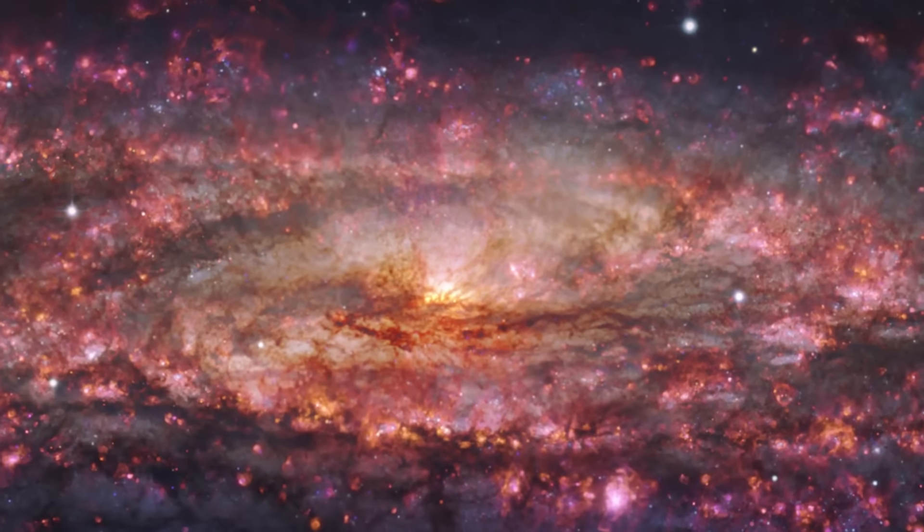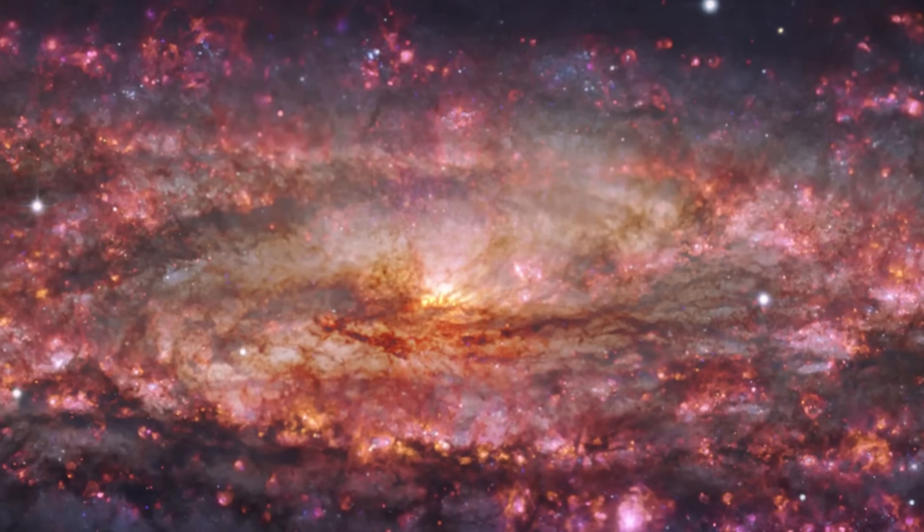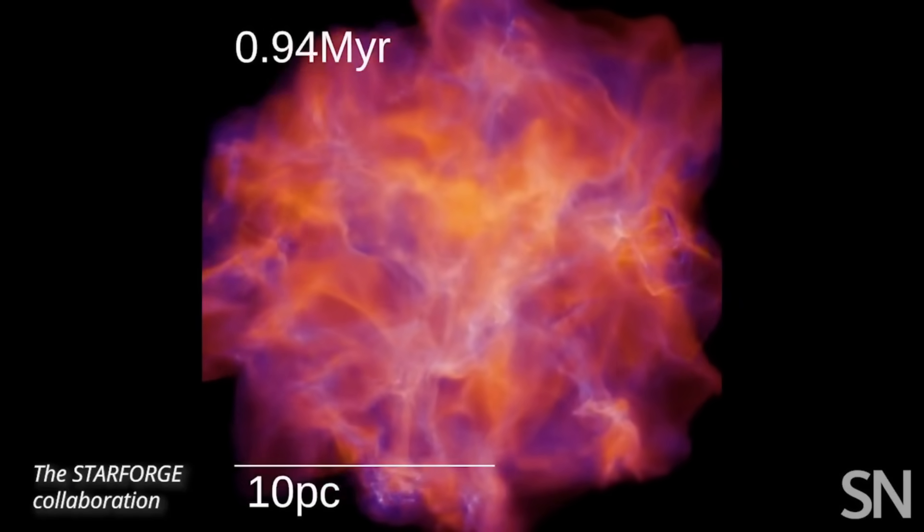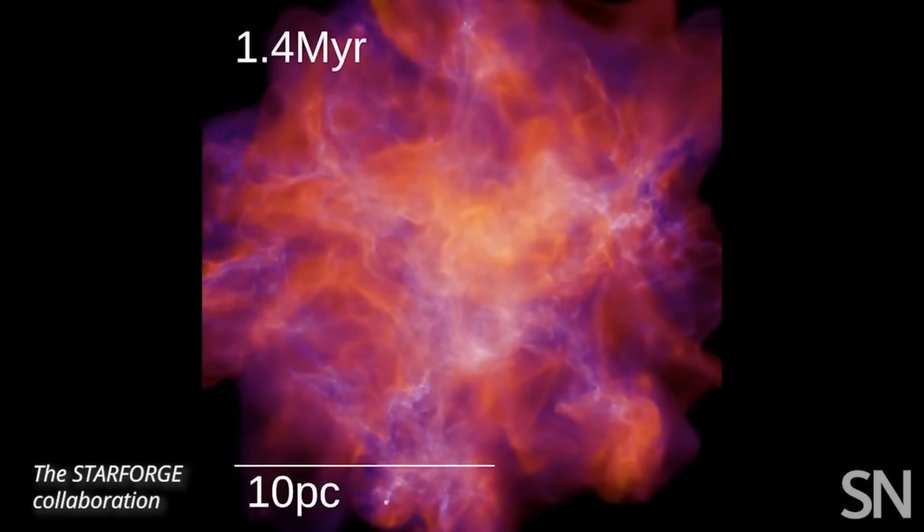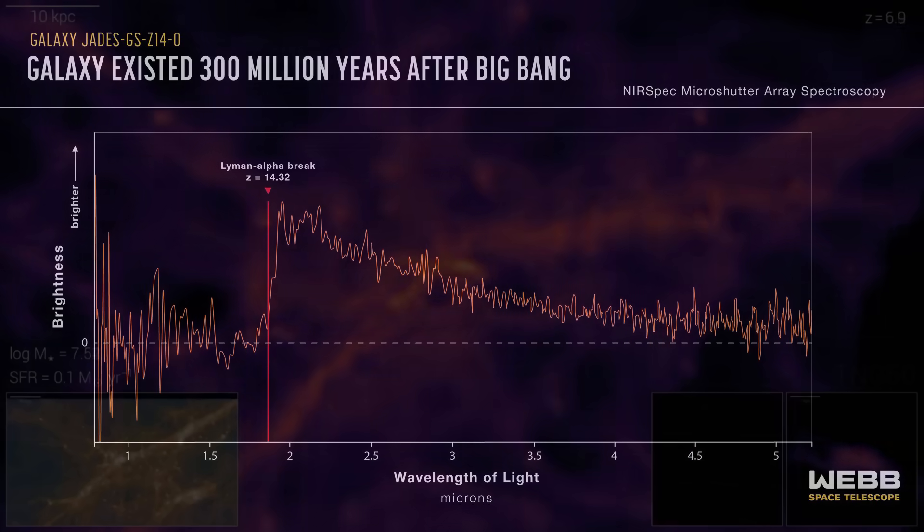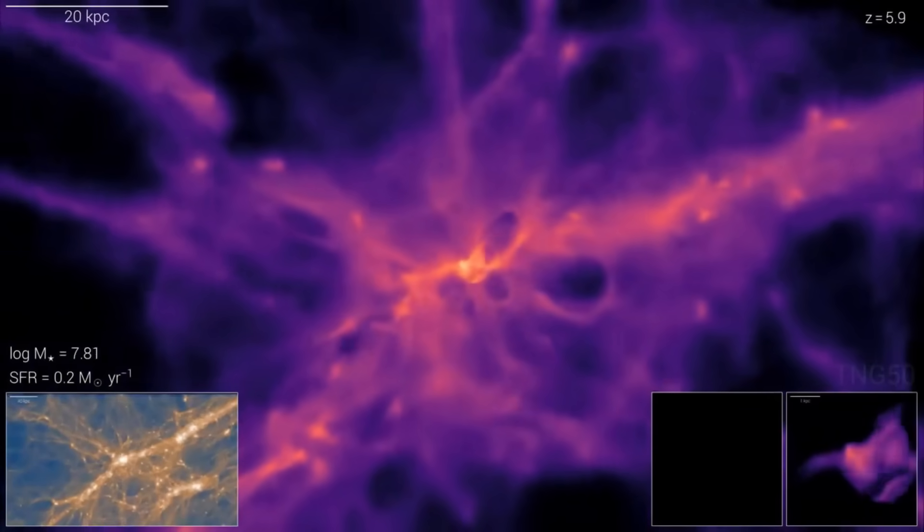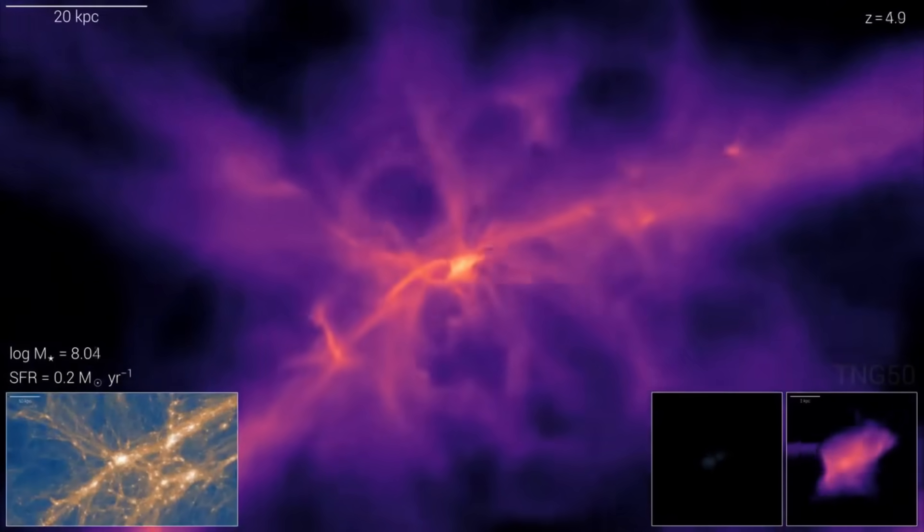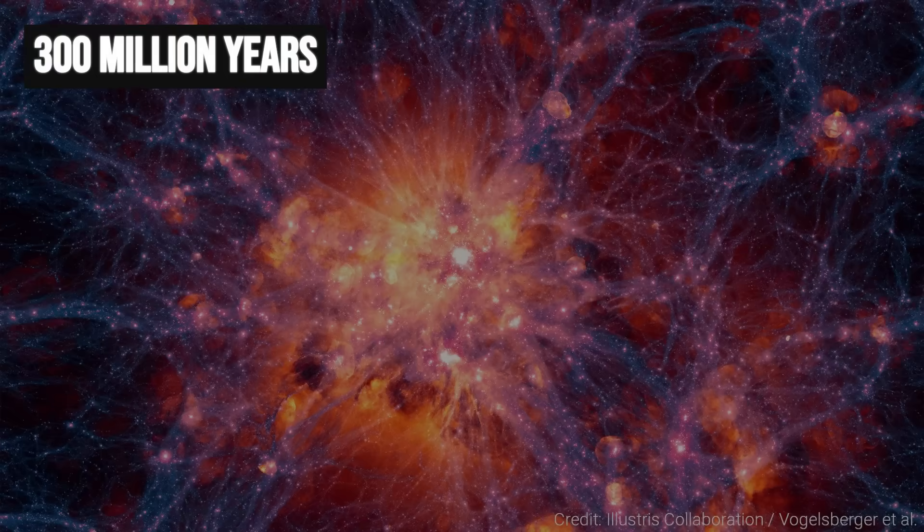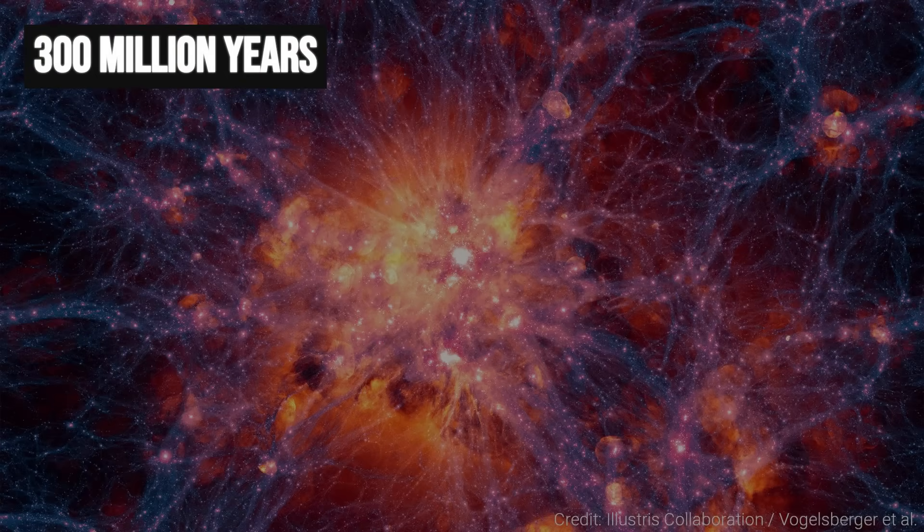These galaxies shine with the brightness of hundreds of millions of suns, compacted into tiny, intense starbursts. Their existence and their chemical fingerprints suggest that galaxy assembly and stellar evolution began at a speed that defies the standard cosmic timeline. In the first 300 million years, the universe was already busy forging complexity.